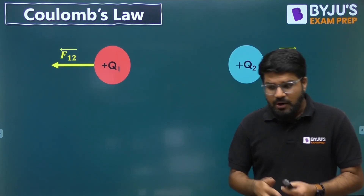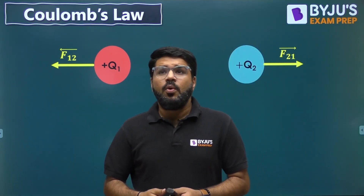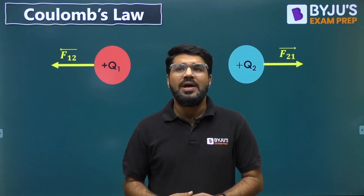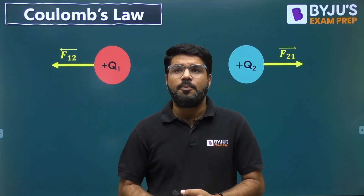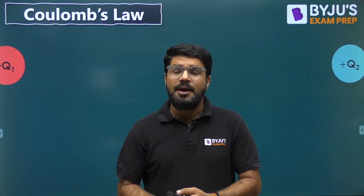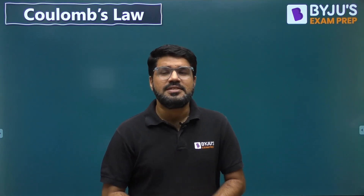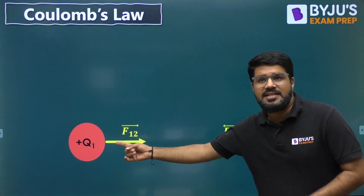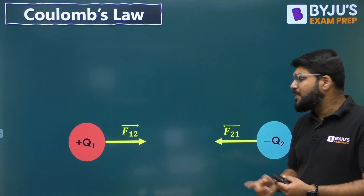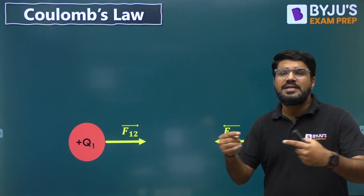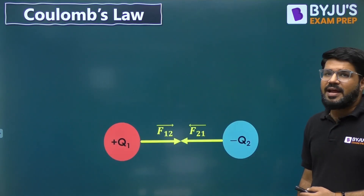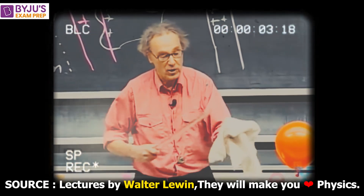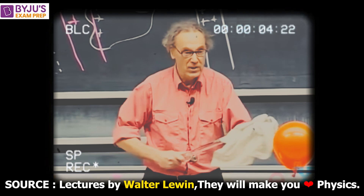We are going to demonstrate that whenever there are two particles of the same charge, like +Q1 and +Q2, they repel each other — they apply force in opposite directions. But if you have charges of opposite sign, like +Q1 and -Q2, they apply an attractive force towards each other. When we rub a glass rod with a piece of silk cloth, it loses electrons, so the glass becomes positively charged and the silk becomes negatively charged.